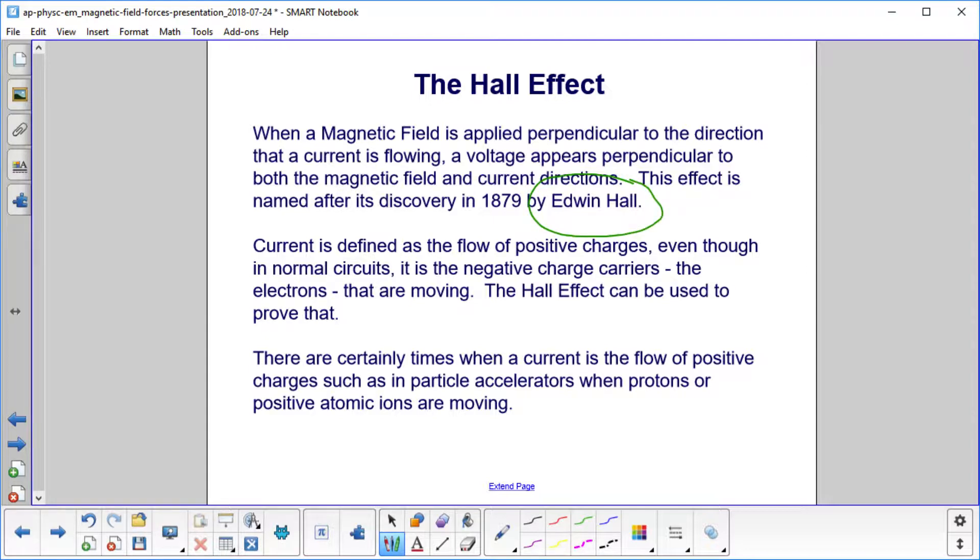Current is defined as the flow of positive charges, even though in normal circuits it's the negative charge carriers, the electrons, that are moving. The Hall Effect can be used to prove that.